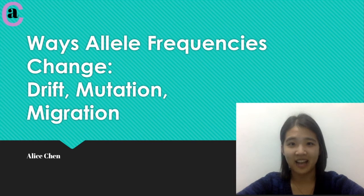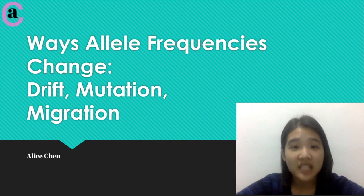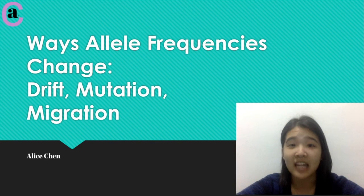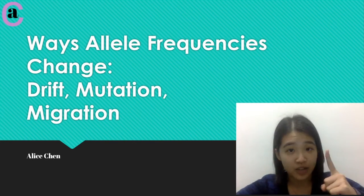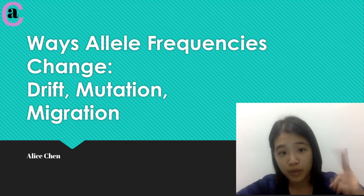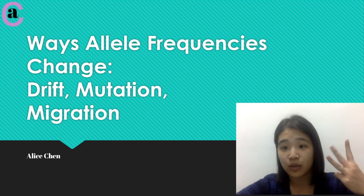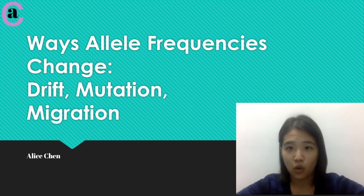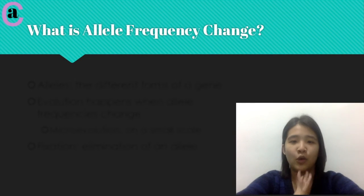Hi, my name is Alice, and today I'm going to be talking more about genetics, specifically the three ways that allele frequencies change, which are genetic drift, mutations, and migrations. So let's get into it.